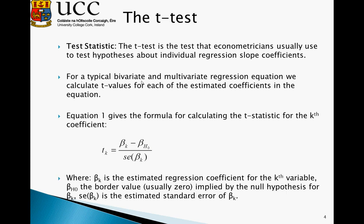So we have beta k as the estimated regression coefficient, beta H0, the hypothesized value usually 0 implied by the null hypothesis, and SE beta k is the estimated standard error of beta k.